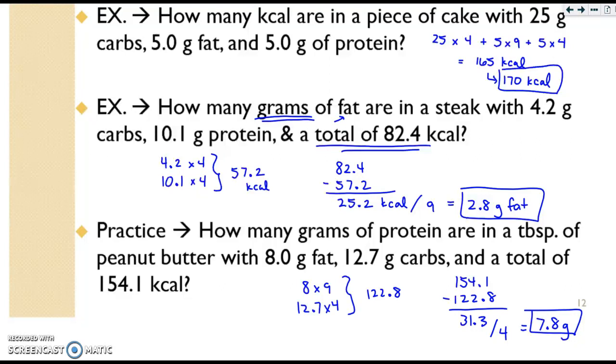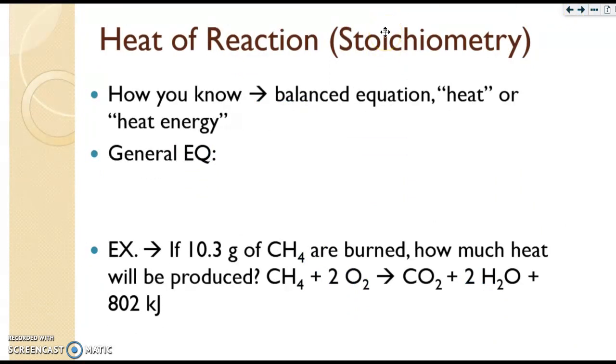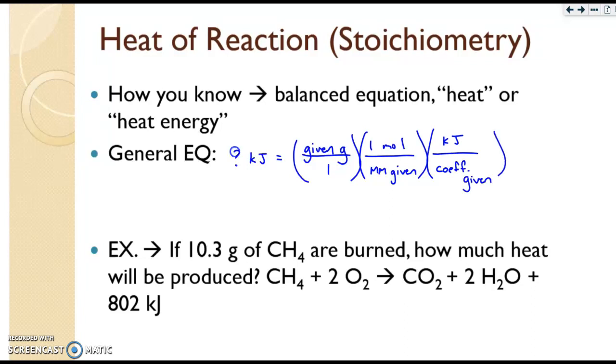The final part of the chapter is stoichiometry. So it's called heat of reaction, or heat stoichiometry. Some clues on how you would know that it's this type of problem. You're going to see the chemical equation, and then it's going to ask you to calculate the heat, or the heat energy. There's a general equation for this. You're going to be looking for kilojoules, and then your given grams goes over 1, and it's 1 mole divided by the molar mass of the given. And then finally, the kilojoules that are in the problem over the coefficient of just the given.